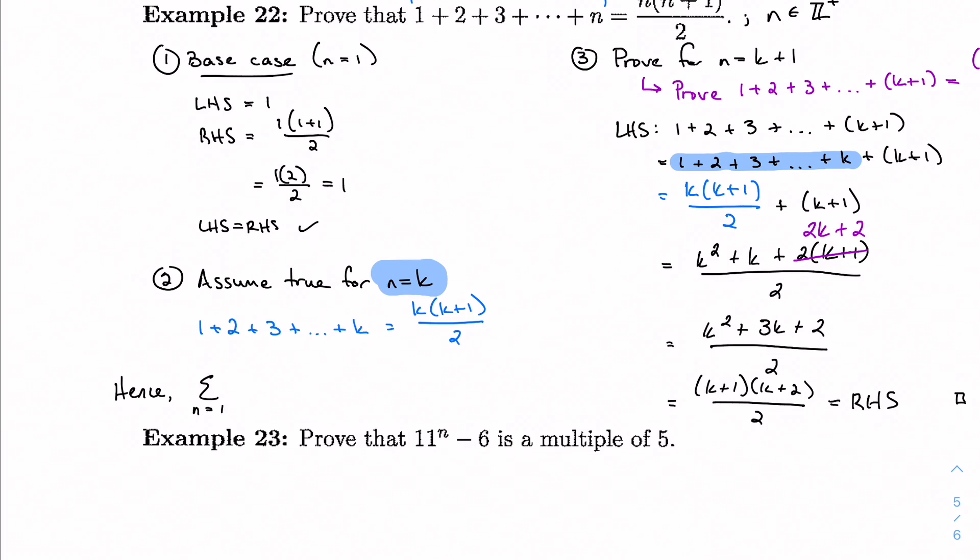The sum from 1 to infinity, I guess, or 1 to however many, 1 to n, of just the integers is n times (n plus 1) over 2. And that sigma is just a shorthand way of writing what I wrote above.